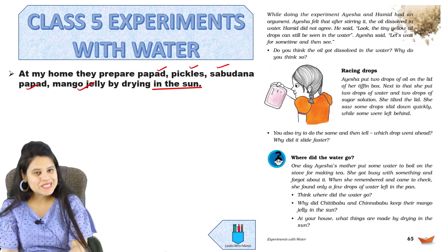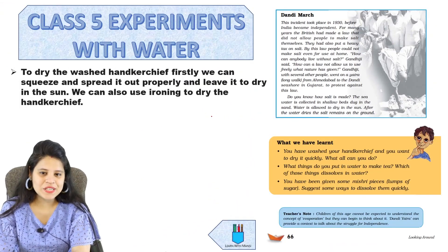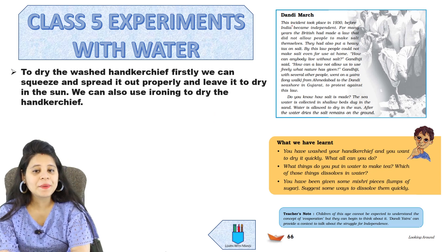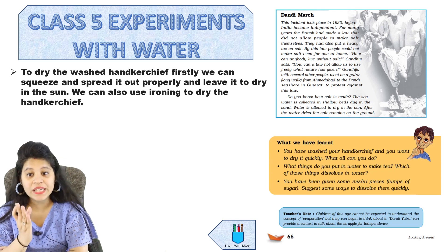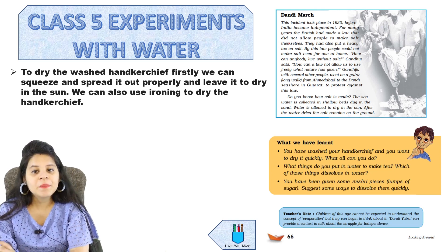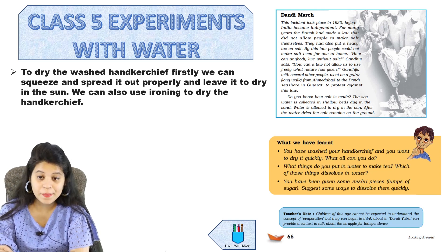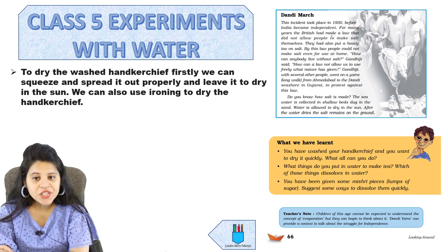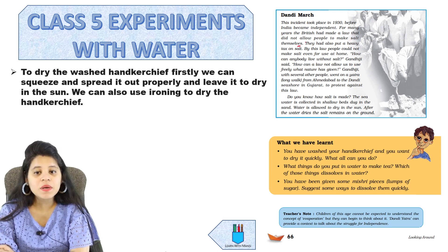Now we'll move to page number 66, which is the last page. The most important topic here is the Dandi March. This incident took place in 1930, before India became independent. For many years, the British had made a law that did not allow people to make salt themselves. There was also a heavy tax on salt.